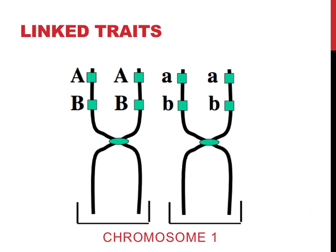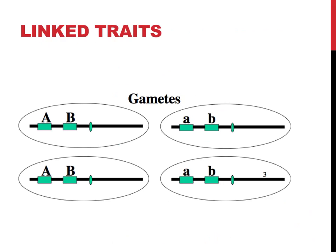If the two traits are linked — that is, they are located on the same chromosome, chromosome 1 in this example — these rules don't hold true. The dominant and recessive alleles from this example are much more likely to be passed on together because they are on the same chromosome, as shown in the image of the potential gametes on this slide.